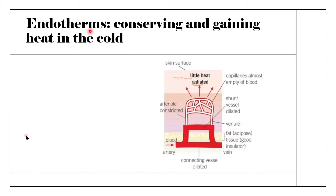We're going to be looking at endotherms today, which are the ones you'll need to know for A-level — organisms that generate heat through metabolic or physiological processes. First, we'll look at how endotherms conserve or gain heat in the cold. The first mechanism is vasoconstriction.